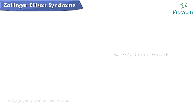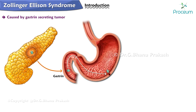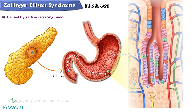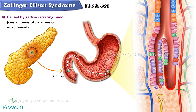Zollinger-Ellison syndrome is caused by a gastrin-secreting tumor called a gastrinoma of the pancreas or small bowel, that gives maximum stimulation to acid-secreting cells of the stomach, as a result of which the gastrointestinal mucosa suffers from ulceration.